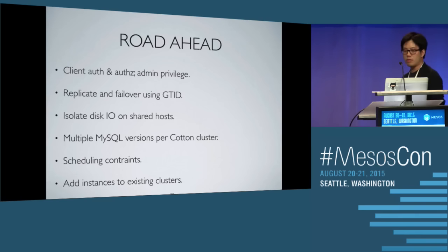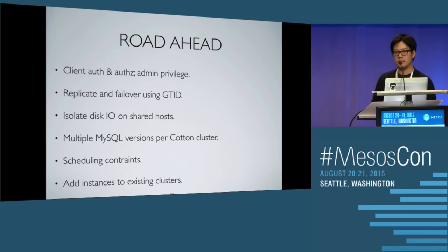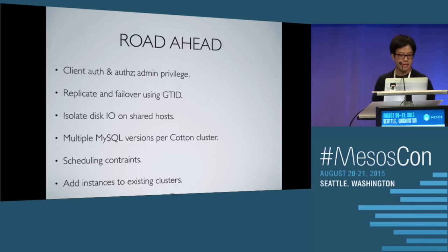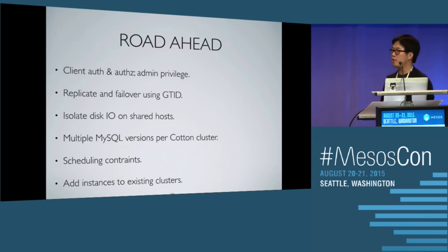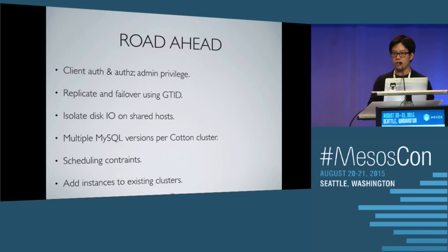There's a long road ahead. We still need to implement common things such as authorization, authentication, and disk I/O isolation on the Mesos side. Scheduler constraints to place different instances on different racks are also needed. We need more effort put in, and we hope to draw collaboration from the community.